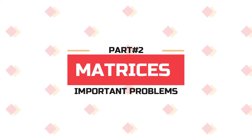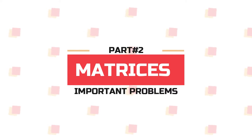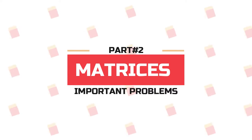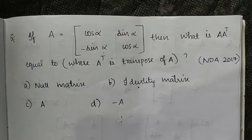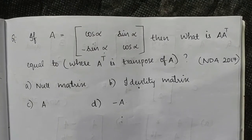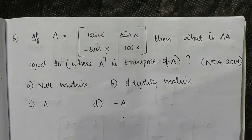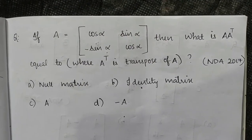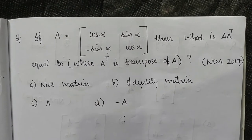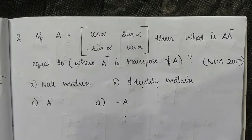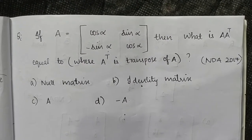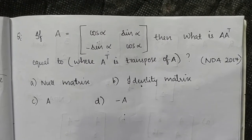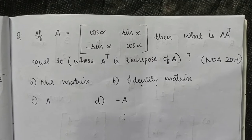We will go to the description box. Let's go to the next questions. Our first question — we are going to discuss this from 2017. If A is equal to [[cos alpha, sin alpha], [-sin alpha, cos alpha]], then what is A times A transpose?